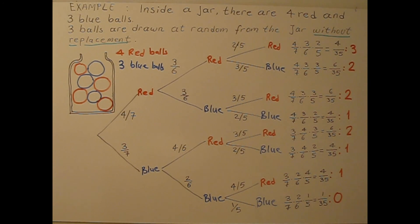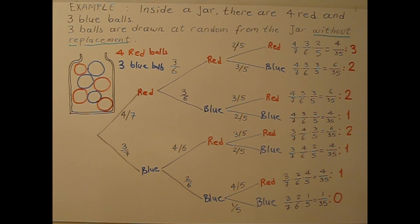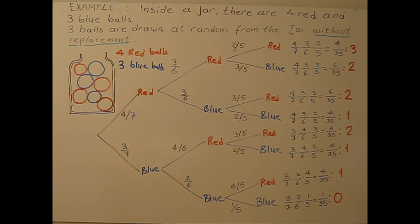The topic of this video is probability distributions of a discrete random variable and expected value. I am going to explain it with an example. Inside a jar there are four red and three blue balls. Three balls are drawn at random from the jar without replacement. The first question is: create a probability distribution in which the random variable represents the number of red balls.